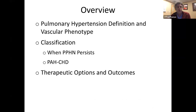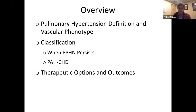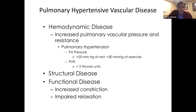For the rest of the hour, I'll cover pulmonary hypertension in terms of its definition and vascular phenotype, how it's classified, the epidemiology, and focus on a couple of the more common forms you may encounter — including PPHN that persists and the form associated with congenital heart disease — and close with an overview of therapeutic options and outcomes. First, the nomenclature is unfortunately problematic. Pulmonary hypertension is defined by certain calculated or measured parameters.